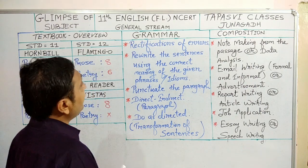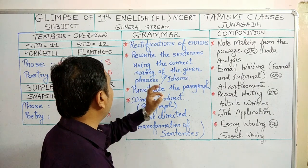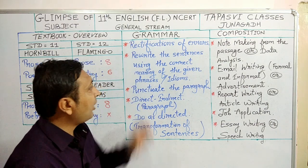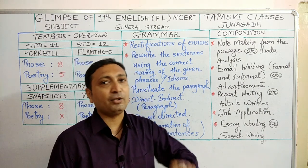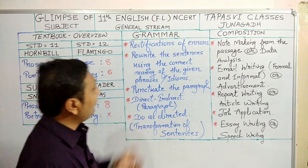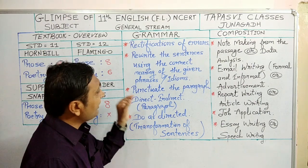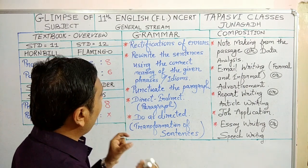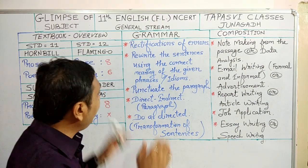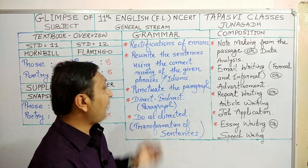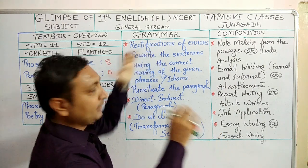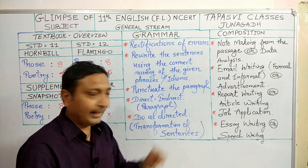The second thing is: rewrite the sentences using the correct meaning of the given phrases or idioms. In your 10th standard you had blanks — blanks of articles, conjunctions, and prepositions. But here, instead of blanks, you will be given a sentence in which one word or a group of words will be underlined. Into the bracket, you are given three meanings. What you have to do is find out the exact meaning of that phrase or idiom that was underlined in the sentence. The options are given in the bracket.